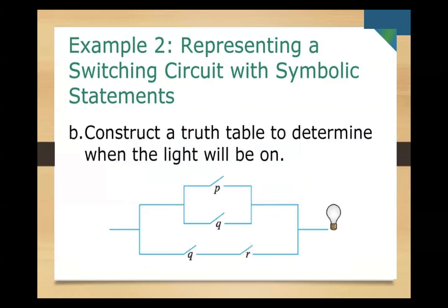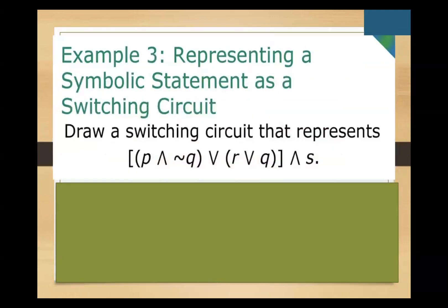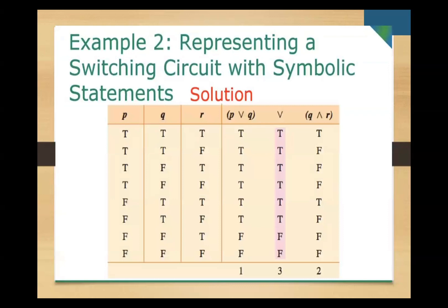Now construct a truth table to determine when the light will be on or off. We have the combined expression (p OR q) OR (q AND r). Since there are three statements — p, q, and r — there are eight possible combinations of true and false. We fill in p, q, and r values and evaluate p OR q and q AND r, then combine them for the overall result.